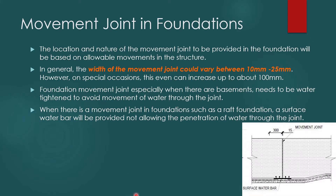Movement Joints in the Foundations: To accommodate the movement of the foundation, we provide Movement Joints. When structures are separated due to irregularity, we also provide Movement Joints, and the foundation is separated by them. Generally, the width of Movement Joints could vary between 10 to 25mm. However, depending on the nature of the structure — for example, in a high-rise building where there is lateral movement — we have to accommodate that lateral movement, and the gap of the Movement Joints may be as high as 100mm. It depends on design requirements. Foundation joints, especially when there are basements, need to be watertight, and that must be considered in the Movement Joints design.